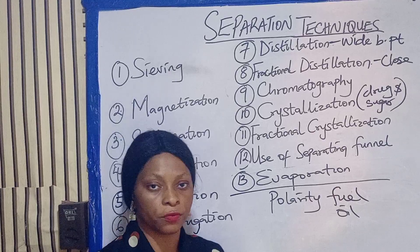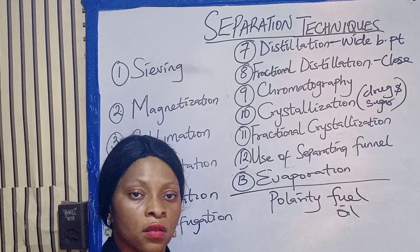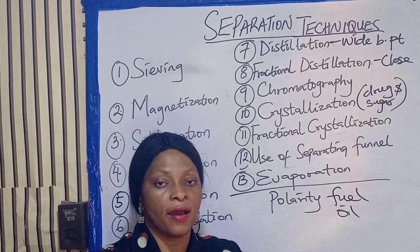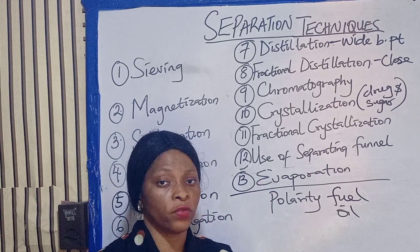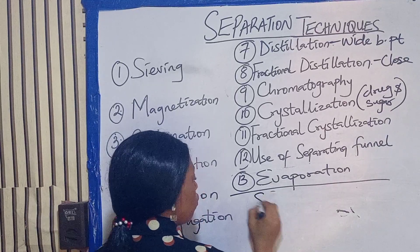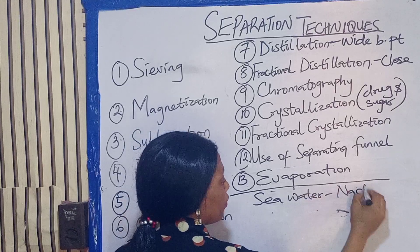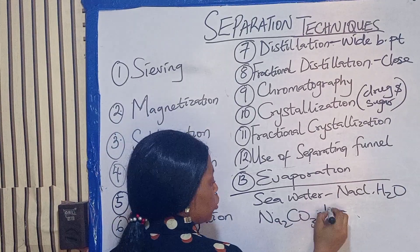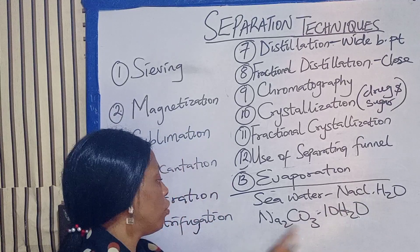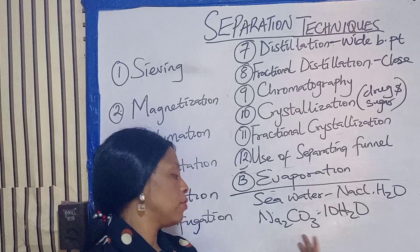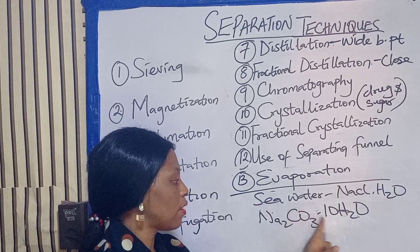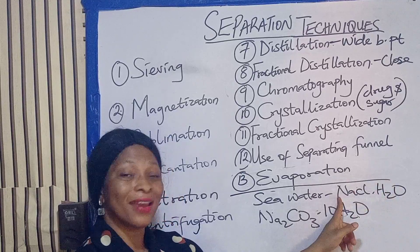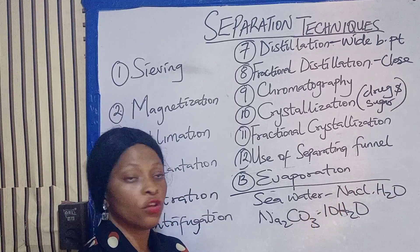The last technique is evaporation. Evaporation is used to separate salts that are very stable to heat — salts that when heated from their solution, the water evaporates but the substance remains. For example, sea water, which is a mixture of sodium chloride in solution. Another example is washing soda, sodium trioxocarbonate(IV) decahydrate. When you heat these, the water leaves but the substance never decomposes. So for substances that never decompose on heat, you use evaporation.